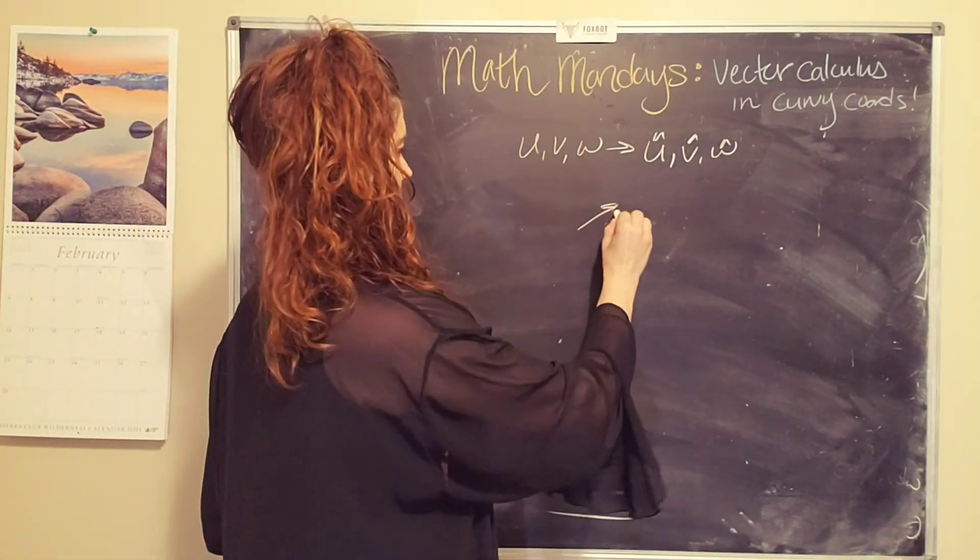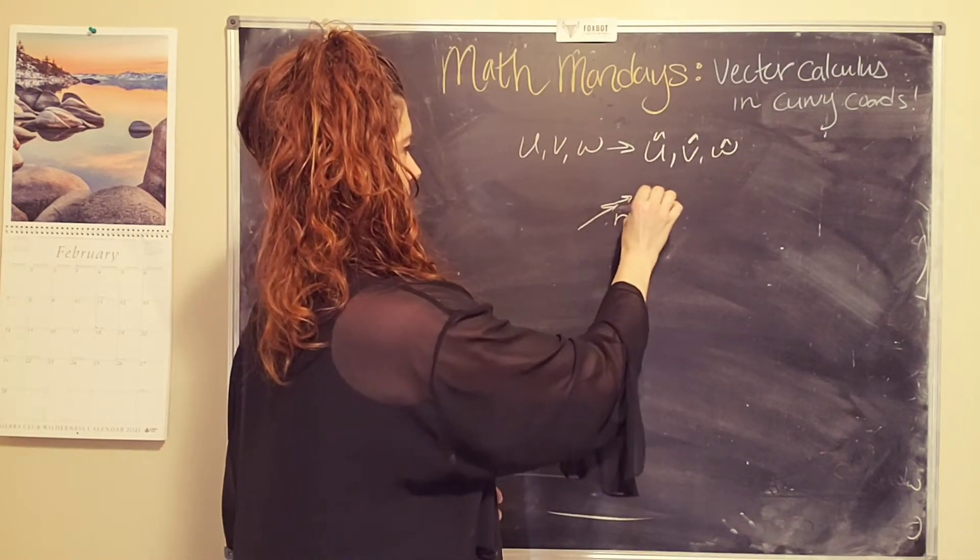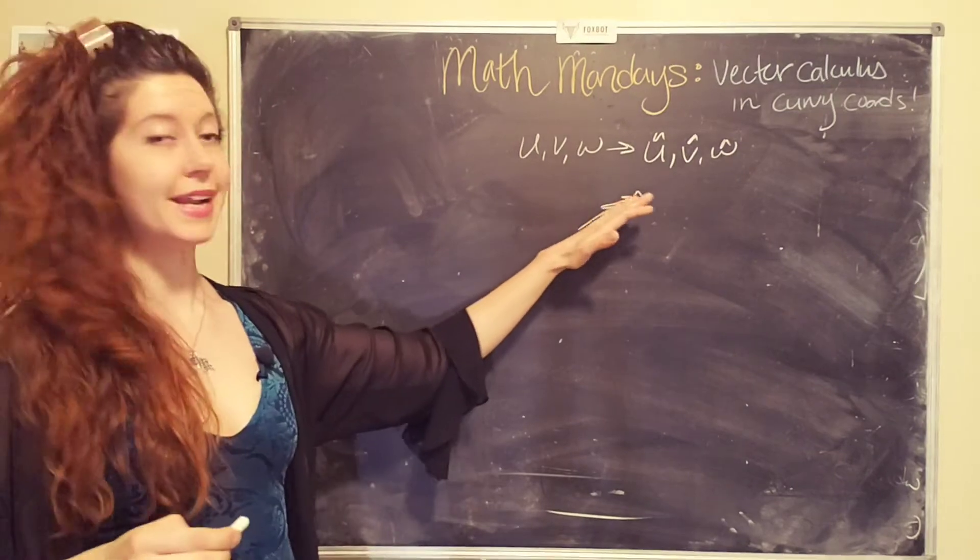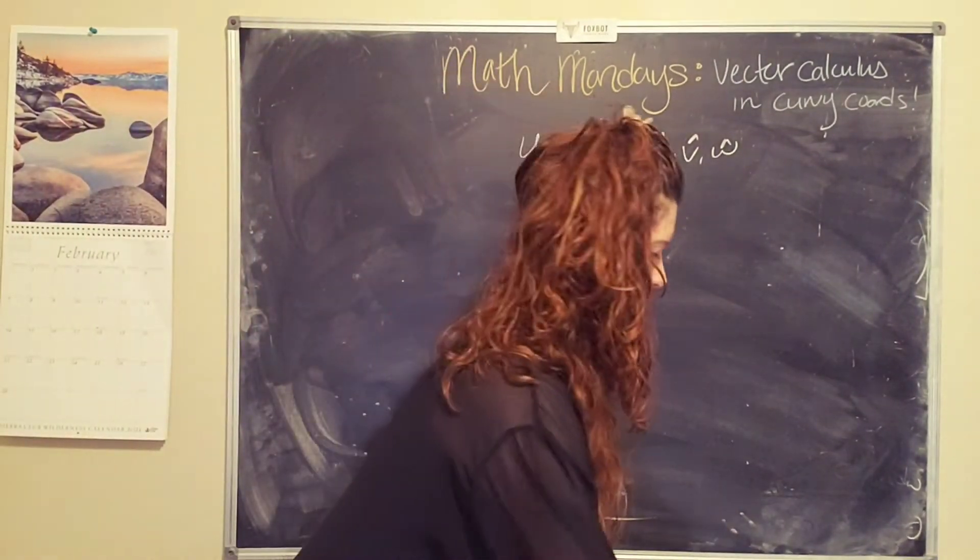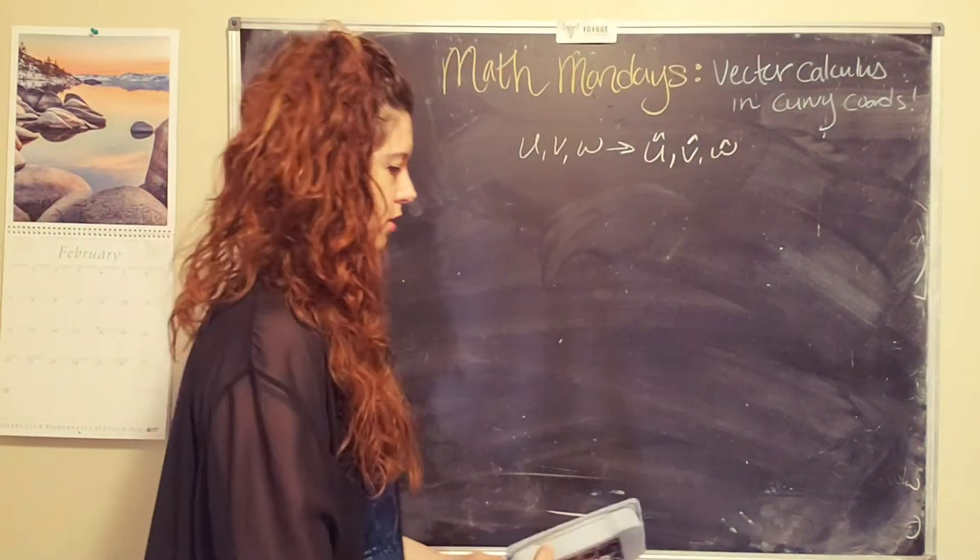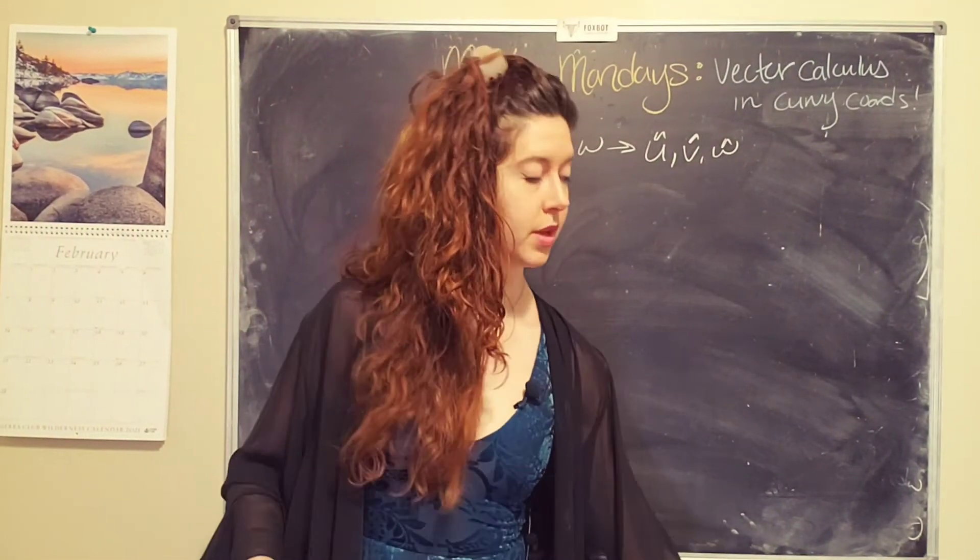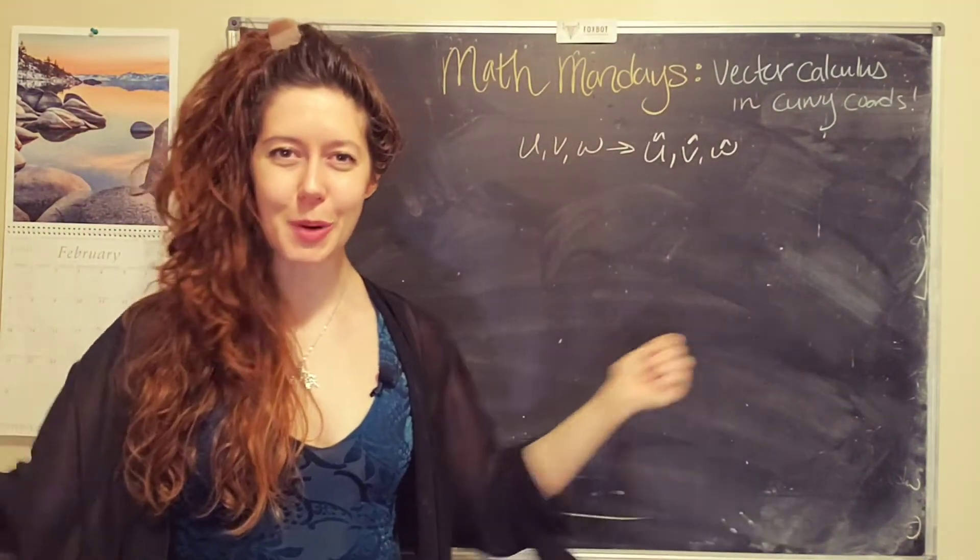But in spherical, we have our direction r, and then r has an r hat. And as our vector moves around, the r hat vector changes. And so does the theta hat unit vector, and so does the phi hat unit vector. So our generic coordinate system, we leave that open to possibility.